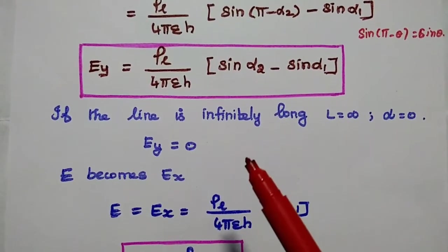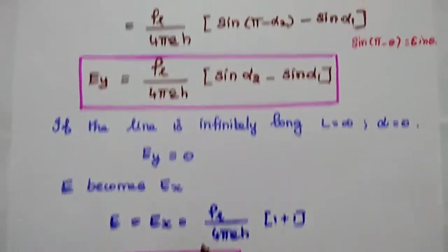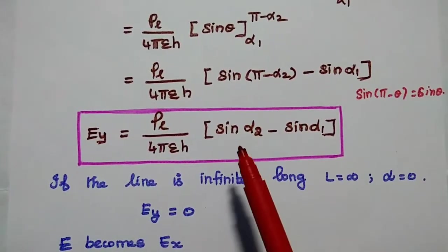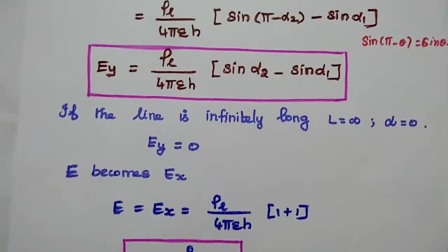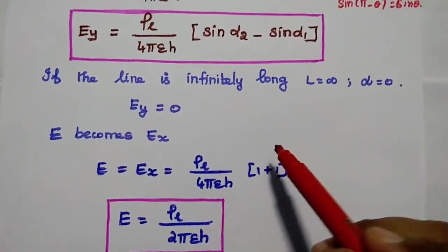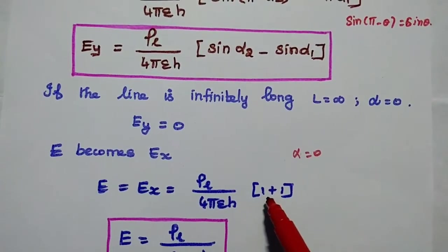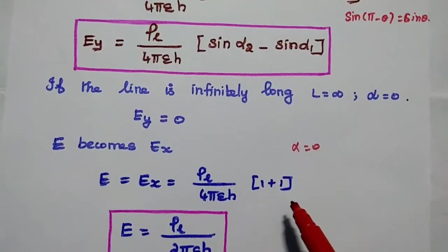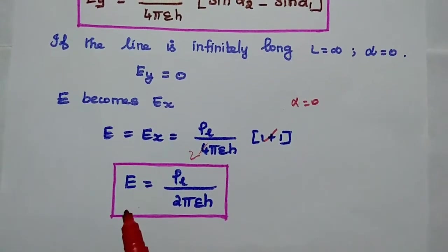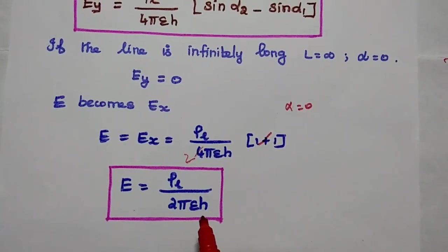If the line is infinitely long, the entire length is infinite and the angles α₁ and α₂ both equal 0. In the Ey component, sin0 = 0 for both terms, so Ey = 0. The overall electric field equals the Ex component alone. Substituting α = 0 into Ex: cos0 = 1, so cosα₁ + cosα₂ = 1 + 1 = 2. Therefore the final electric field for an infinite line is E = ρL / (2πεh).